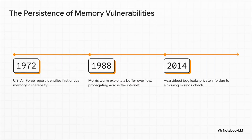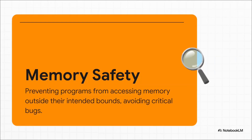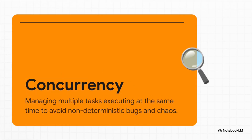So what is memory safety, really? The best way to think about it is like real estate. Your program gets a specific plot of land in the computer's memory. Memory safety is just one simple rule: stay on your own property. Don't go wandering into your neighbor's yard and messing with their stuff. When you break that rule, that's when you get absolute disasters like buffer overflows.